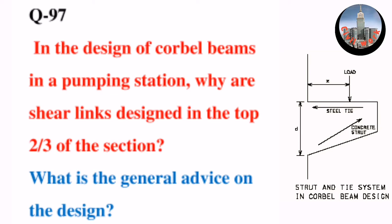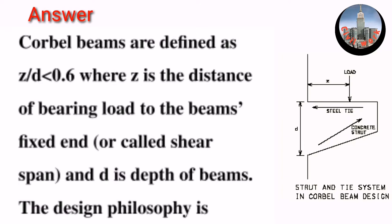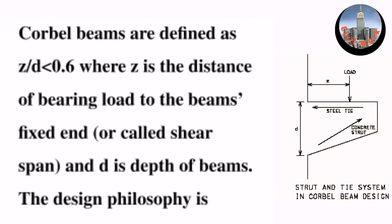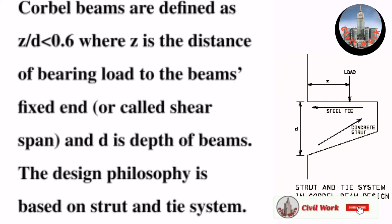Question number 97: In the design of corbel beams in a pumping station, why are shear links designed in the top two-thirds of the section? What is the general advice on the design? Corbel beams are defined as z/d less than 0.6, where z is the distance of bearing load to the beam's fixed end (or called shear span) and d is depth of beams.